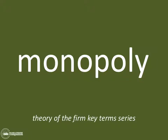Hey everybody, I hope you're doing well today. This is Brad Cartwright from EconCourse Companion, and we're going to take a look at the market structure of monopoly in a very brief overview, which is part of the Theory of the Firm Key Terms series. Monopoly is one of the four market structures that we look at in Theory of the Firm for IB Economics, and the critical aspects of monopoly are very important to get straight.